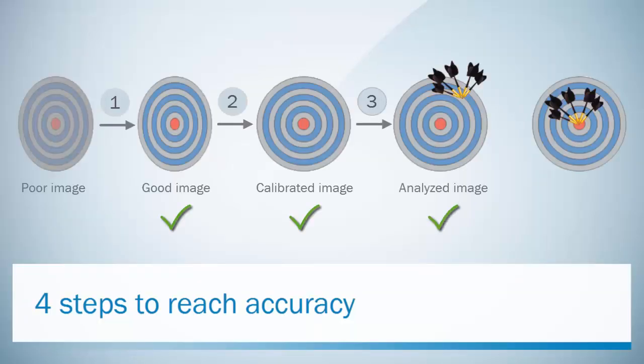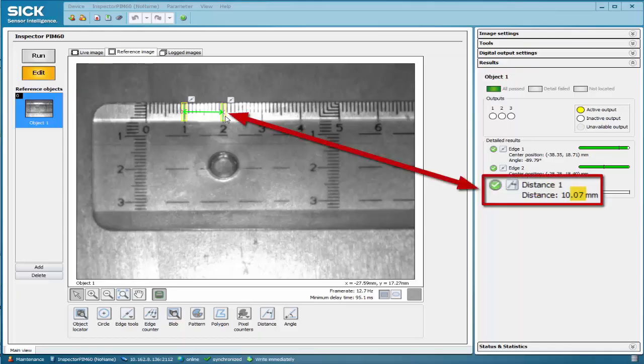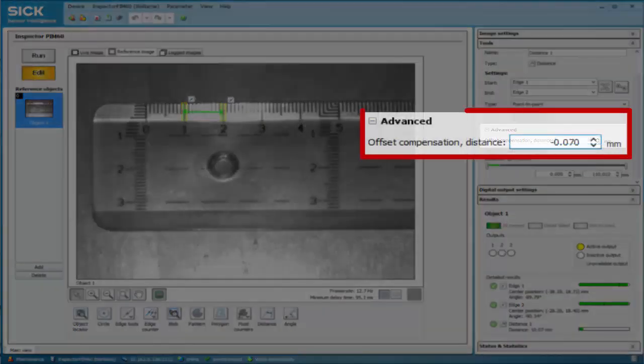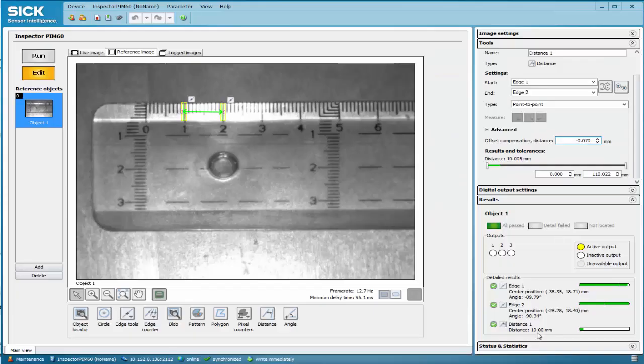All steps up to this point influence the repeatability. In case the measurement result contains a static bias, you can easily correct it by applying an offset compensation value.